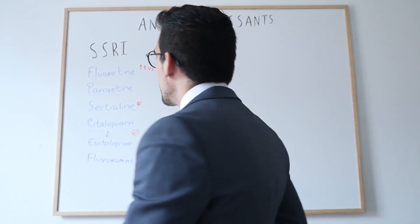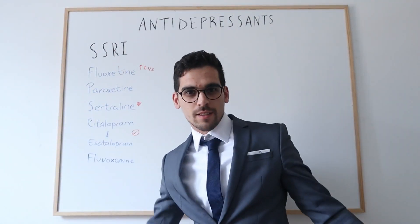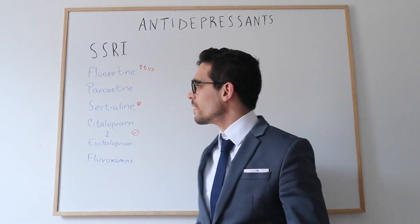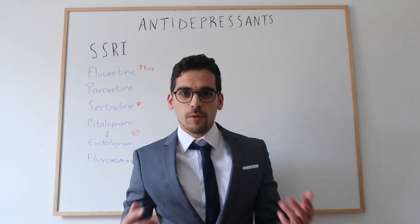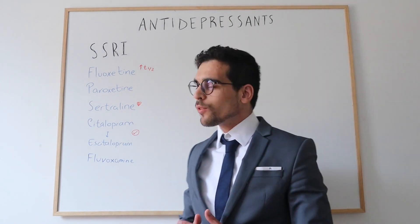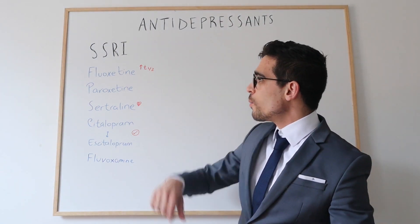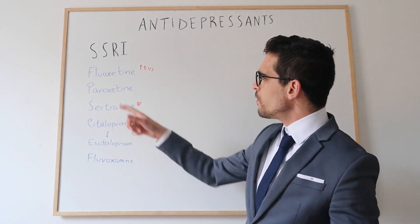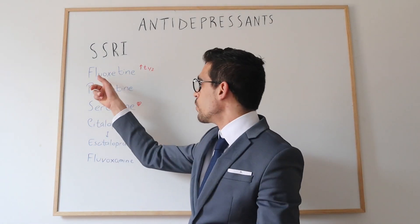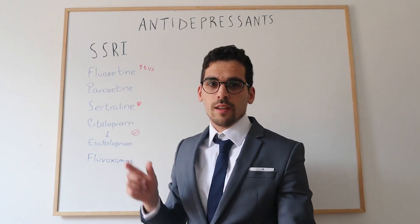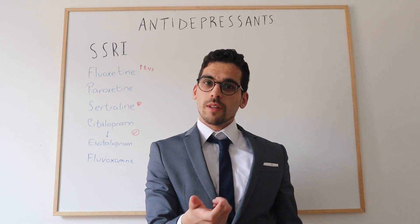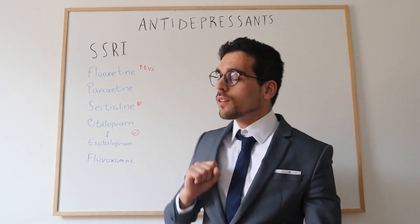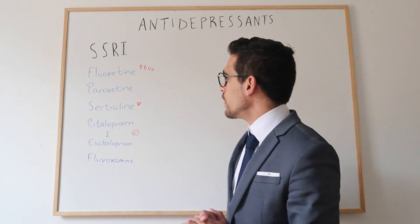Let's start with the SSRIs — the selective serotonin reuptake inhibitors. So let's start with fluoxetine. Fluoxetine is known to be the one with the longest half-life. If you look at how it starts, it's 'flu' — fluoxetine. You can think a flu normally lasts around one week, and that's exactly the half-life of fluoxetine.